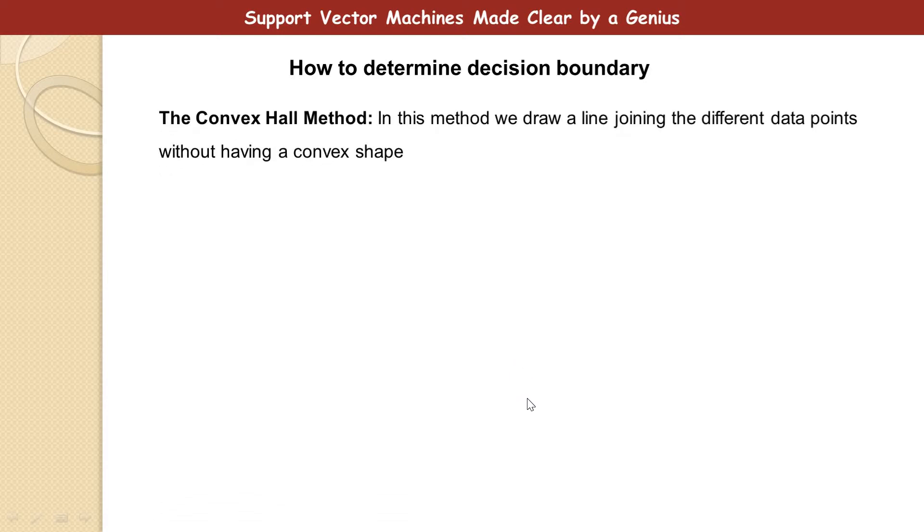One method is called the convex hull method, and we are going to determine the decision boundary manually by eyeballing. But that is looking at it, and we know the decision boundary, and we also look at the way the computer will actually do it using so many data points.